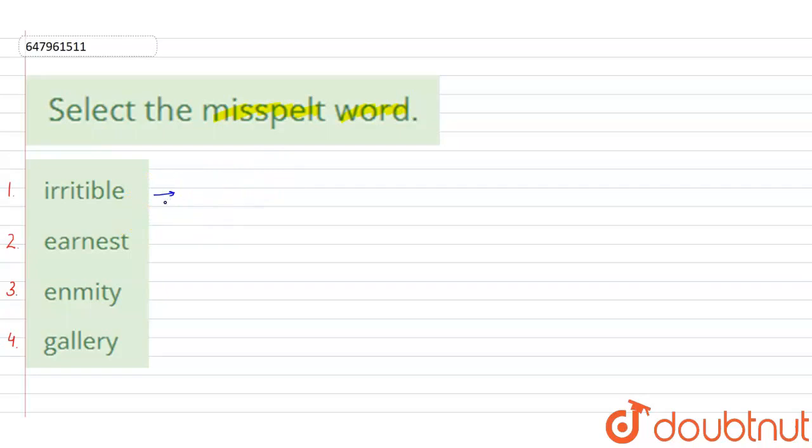Irritable means having or showing a tendency to be easily annoyed. So it means tendency to be easily annoyed.